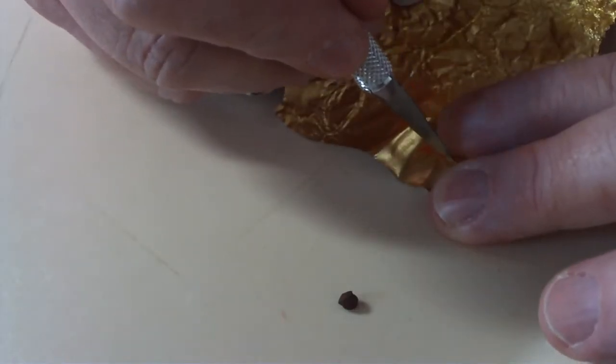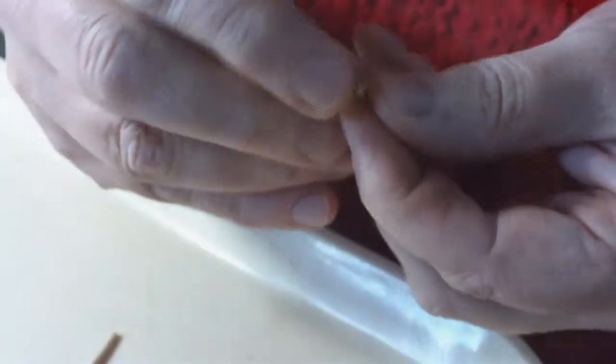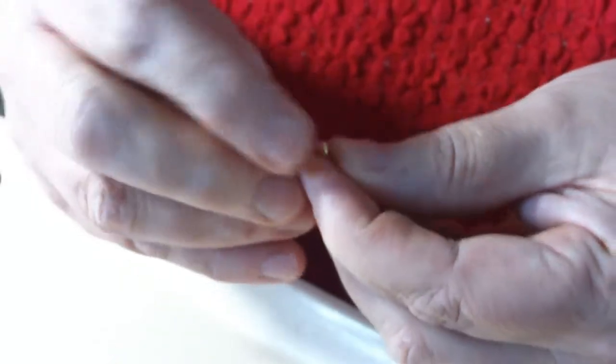You can use the gold foil from foil-wrapped candy to make your own foil wrap. Take one of the chocolates you've already baked and cover it with a small square of the foil.